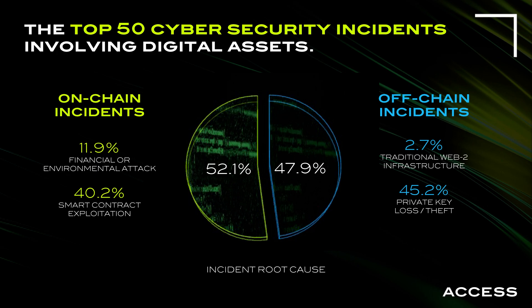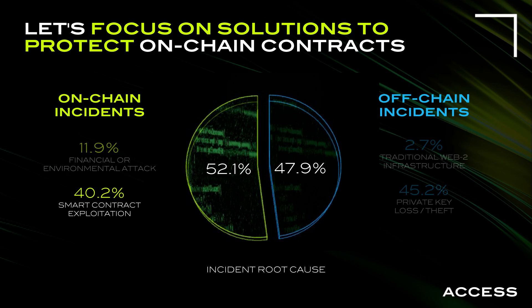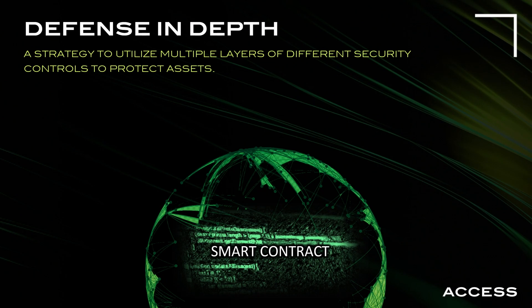The way to protect on-chain and off-chain threats is completely different. Traditional Web2 infrastructure accounts for a small percentage. Private key loss and theft is the majority of off-chain incidents. On the on-chain side, we have about 12% for environmental attacks and 40.2% for smart contract exploitation. We're going to focus on smart contract exploitation because that is where the largest gap exists right now in cybersecurity, and it's what a lot of people are developing around.